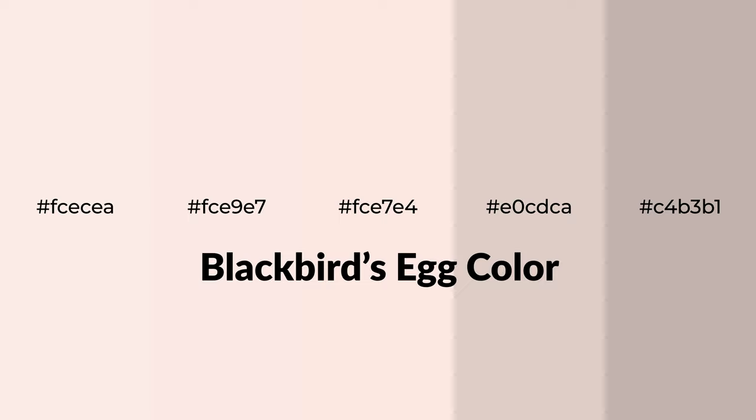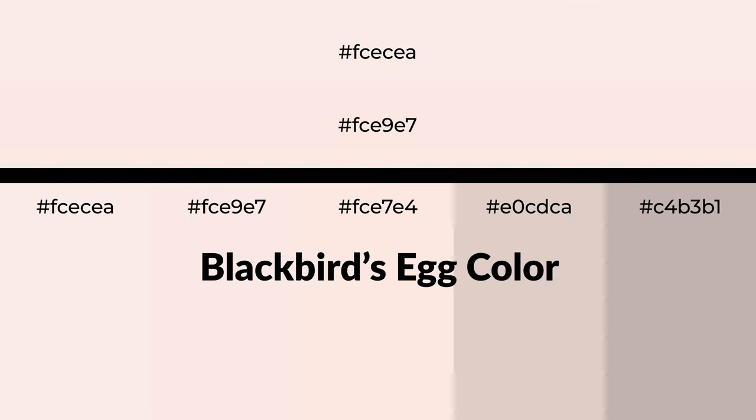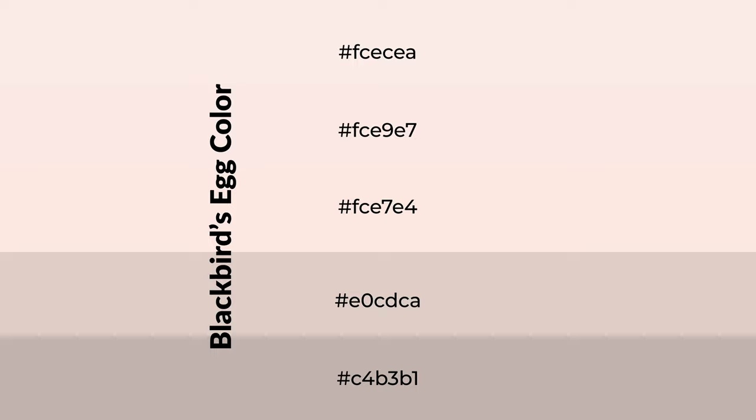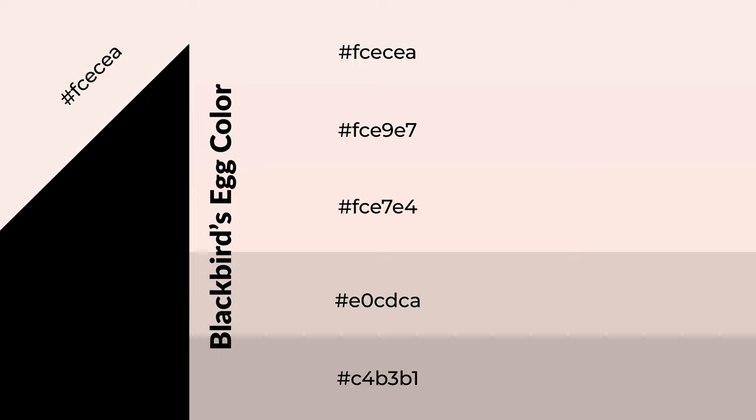Warm shades of blackbird's egg color with red hue for your next project. To generate tints of a color, we add white to the color — tints create light and exquisite emotions. To generate shades of a color, we add black to the color, and it is used in patterns, 3D effects, and layers. Shades create depth and drama.